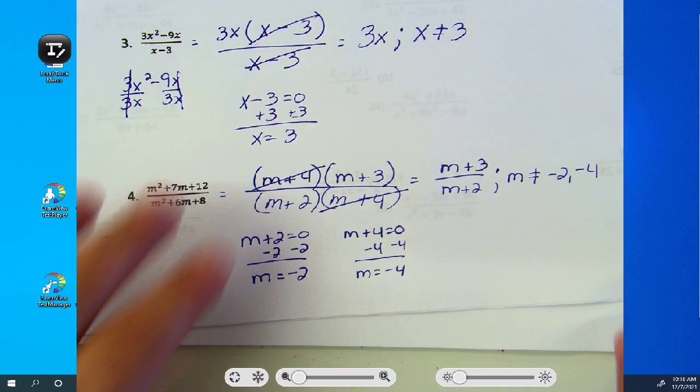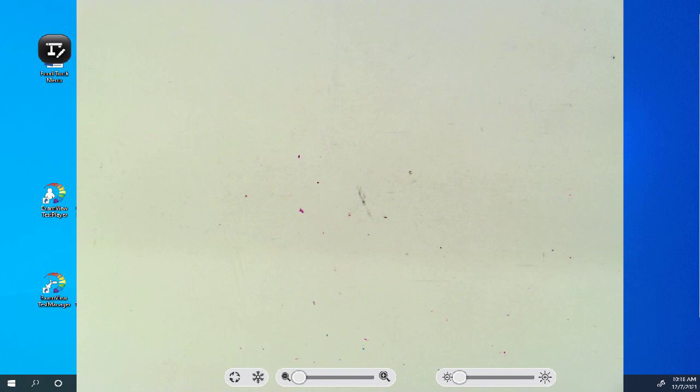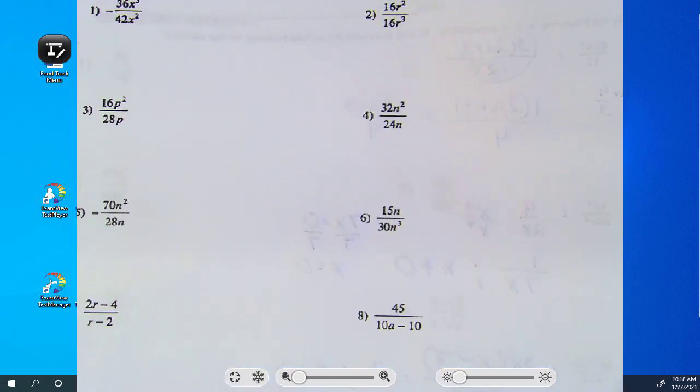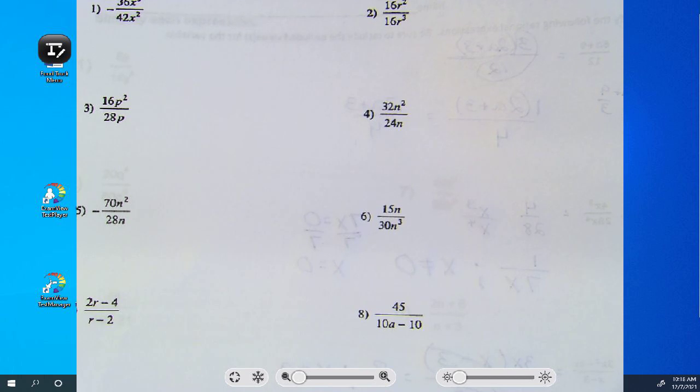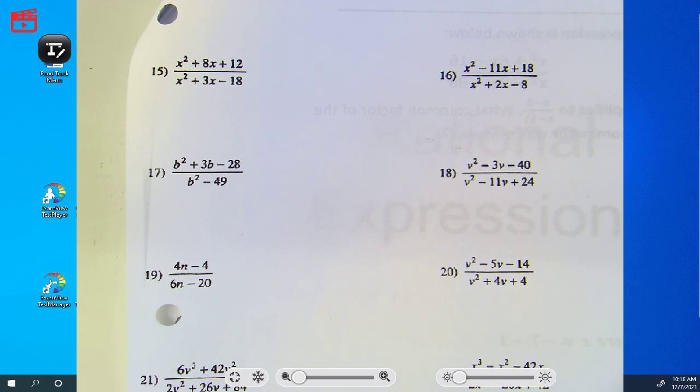All right, let's go to page seventeen. On seventeen and eighteen are a whole bunch of problems that you're going to start working on. I will tell you, and this is an incentive, the odds are going to be what's required to have done tomorrow. If you get it all done, you get extra points. So the odds are the minimum, and that's like classwork homework. If you want extra points, you can do it all.